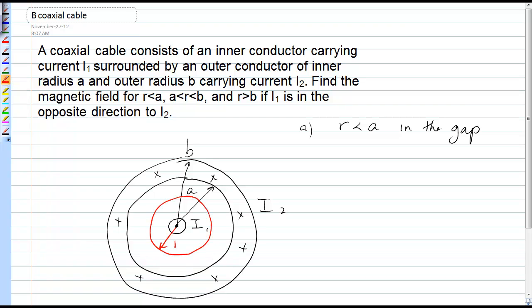It has radius r and the magnetic field using Ampere's law is mu naught I1 over 2 pi r because the amount of current threading through that Amperian circle is just I1.